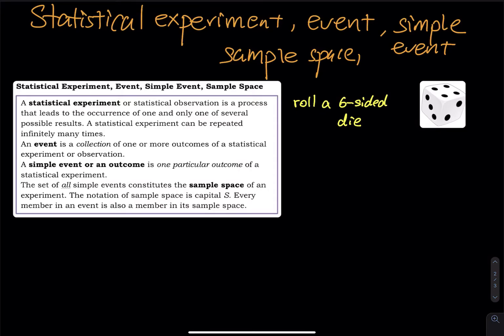In this video, I will talk about statistical experiment, event, simple event, and sample space. A statistical experiment or statistical observation is a process that leads to the occurrence of one and only one of several possible results.